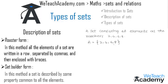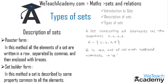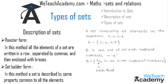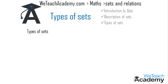In set-builder form, a set is described by a common property shared by all its elements. For example, let B be the set of all even natural numbers. In set-builder form, we represent all even natural numbers with the variable x and write: B = {x such that x is an even natural number}, where the vertical bar represents 'such that'.